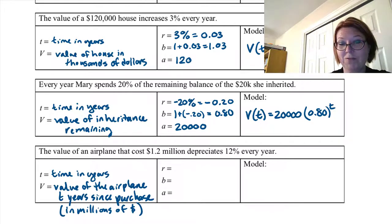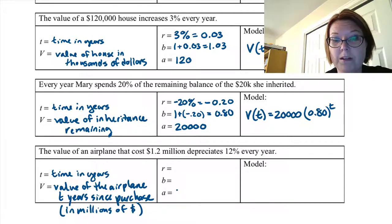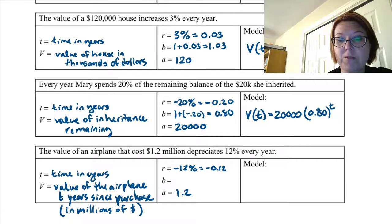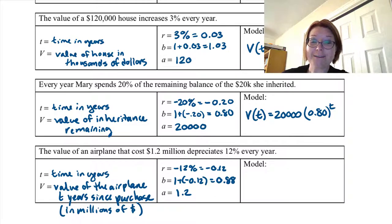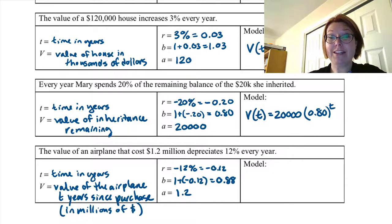All right, rate growth factor, initial value. Well, the initial value is 1.2 million. It's just 1.2. It's depreciating 12% a year, so that's minus 12%, which is negative 0.12. And then the B value will be 1 plus negative 0.12, which is going to be 0.88. In other words, depreciating 12% means that 88% remains every year.